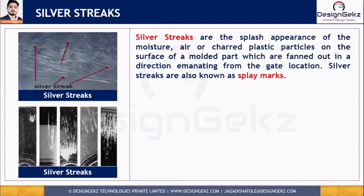Whatever we are discussing here — silver streaks that occur during manufacturing — can be considered a manufacturing defect.